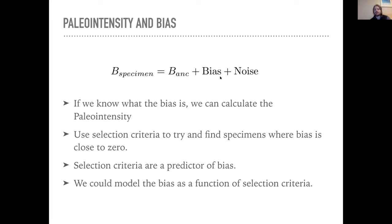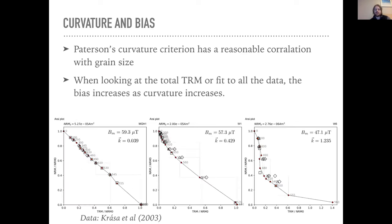By applying selection criteria, we're essentially saying they are a predictor of what the bias will be. In a machine learning framework, you'd model bias as a function of those selection criteria and then correct back to the good values. The issue is that we generally don't have many specimens at the site level, and we have many empirically-based selection criteria without a clear understanding of their relationship to bias. It's too complicated for the number of specimens we have. But one predictor I wanted to focus on is curvature.